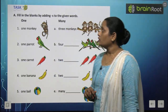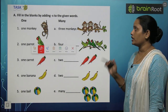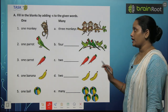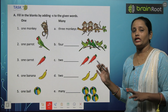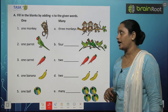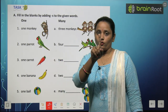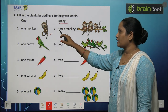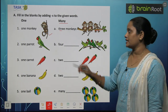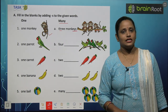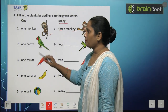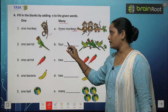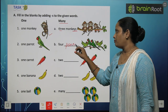Now let's do Exercise A given in the book. The exercise is: fill in the blanks by adding S to the given words. Toh yahan kuch words diye gaye hain, unme S laga ke unhein plural mein convert karna hai. First one is: one monkey — many karne ke liye teen hain, toh hum likhenge monkeys, S laga diya. Next is one parrot — one, two, three, four hain, toh parrot mein S laga ke parrots.